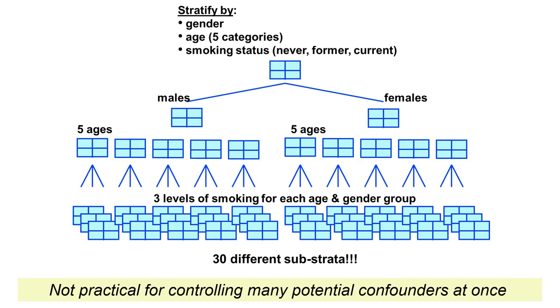Stratification may not be practical for controlling for many potential confounders at once. If you are trying to control for gender, age, and smoking status simultaneously through stratification, you can see how many substrata you would have — it can be a nightmare. So don't try to control for many potential confounders by doing stratification.